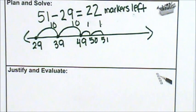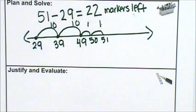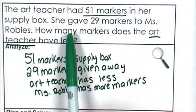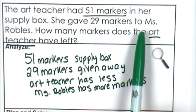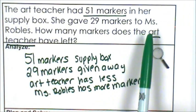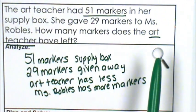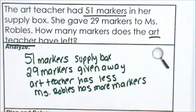Now I'm going to justify and evaluate my answer. How can I prove that my solution answers the question? My answer is 22 markers. Is that answer reasonable? The art teacher had 51 markers and she gave 29 markers to Ms. Robles, so she doesn't have those 29 markers anymore. That means the number she has left has to be a lot smaller than 51, and 22 is smaller than 51.